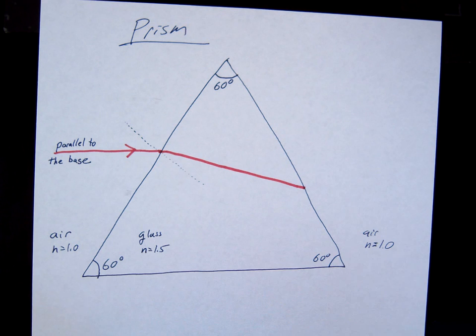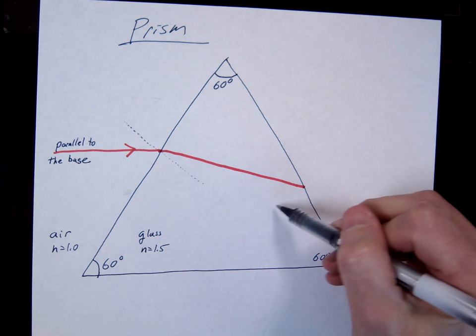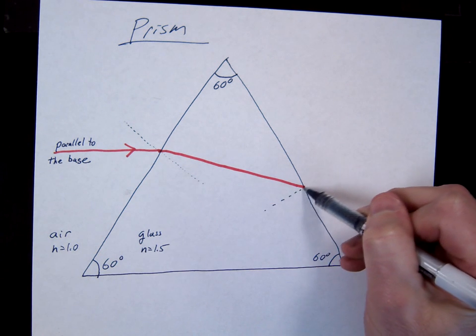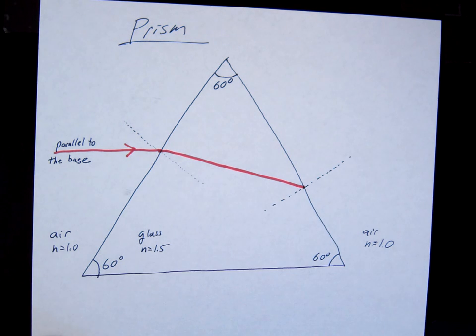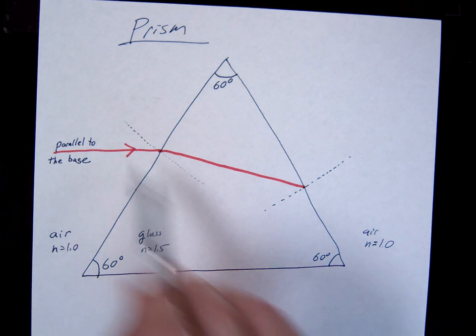On our second boundary, you should draw on the new normal. The new normal is perpendicular to the new surface. So make sure you draw the normal correct. It's not going to look like the other side.